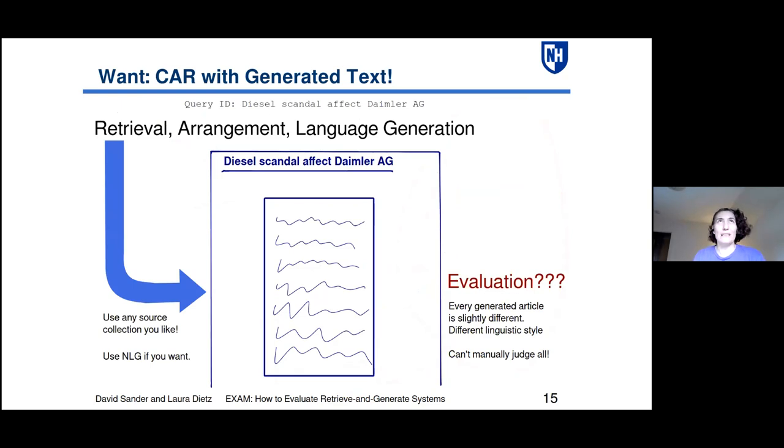But ultimately, this was not really the complex answer retrieval task that I would have liked to work on. I would like to work on a task that combines retrieval, arrangement of passages or selection, as well as language generation or summarization, because I want to have a nicely written article. And in particular, I didn't want to be confined to just using paragraphs from Wikipedia. I wanted to use any source collection that I wanted, and if I wanted, by my choice, I wanted to use NLG systems. And this is optional. I wanted to actually compare an NLG system with a just retrieval only system, maybe comparing across different source collections. The problem is, and this is why we never ran it as a track, there are severe problems regarding evaluating the system.